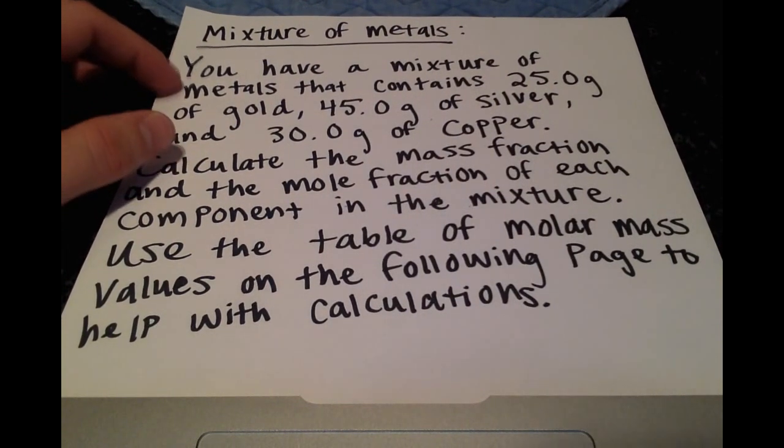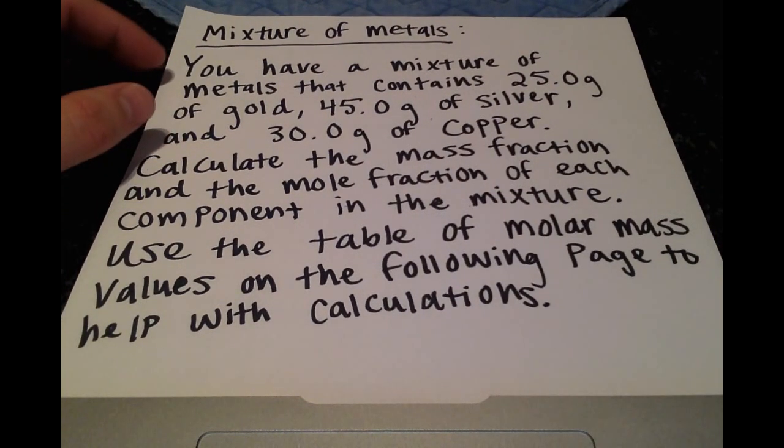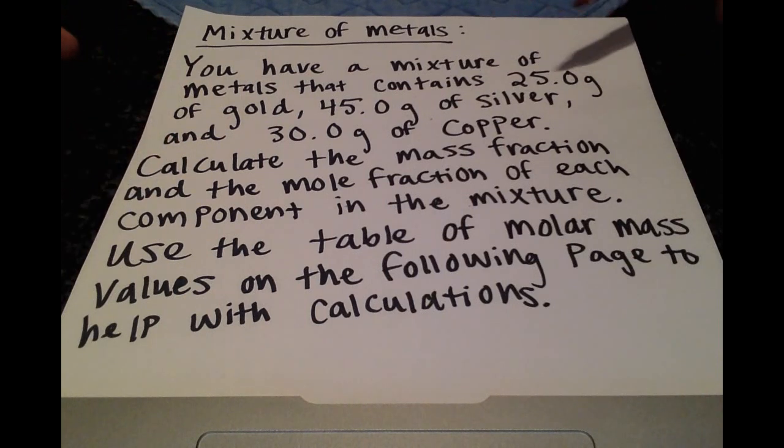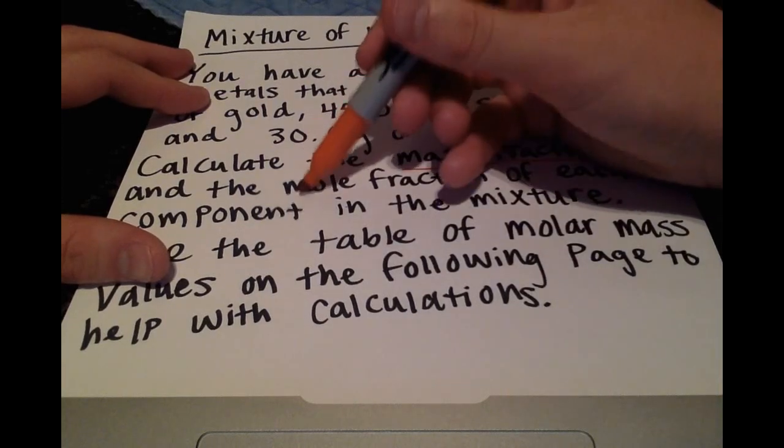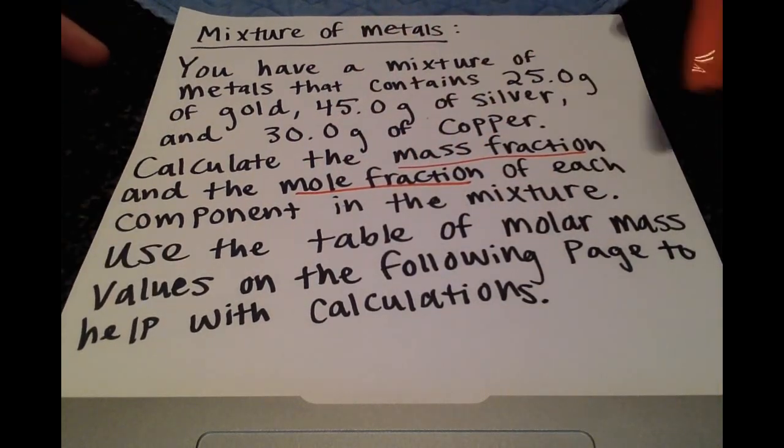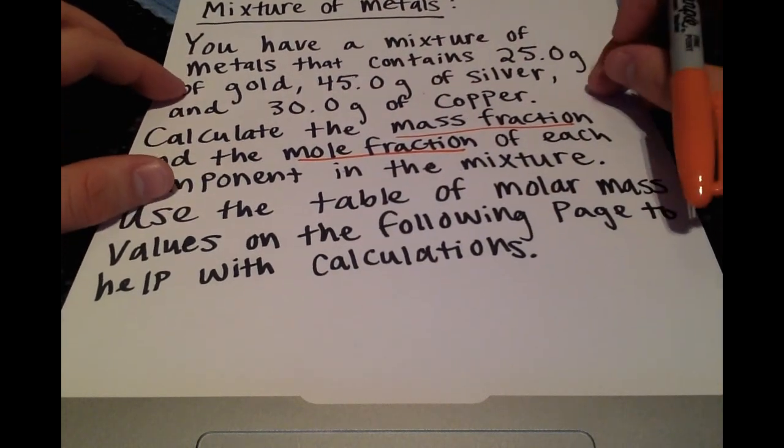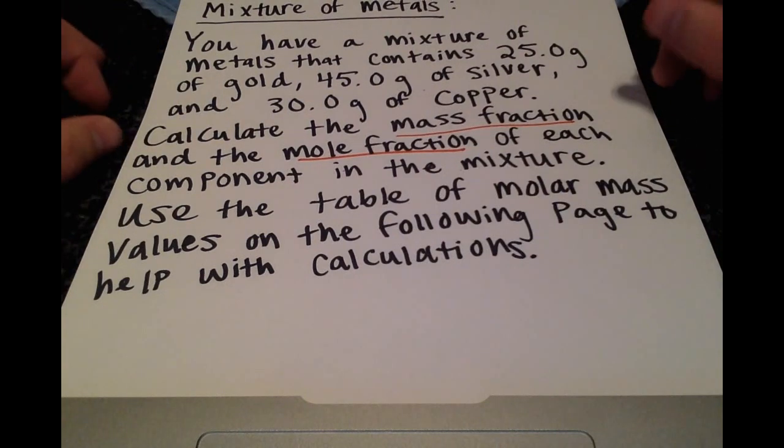Okay, so we have a mixture of metals. We have 25 grams of gold, 45 grams of silver, and 30 grams of copper. And we want to calculate the mass fraction and mole fraction of each component. We're also given a table of molar mass values to help us out.